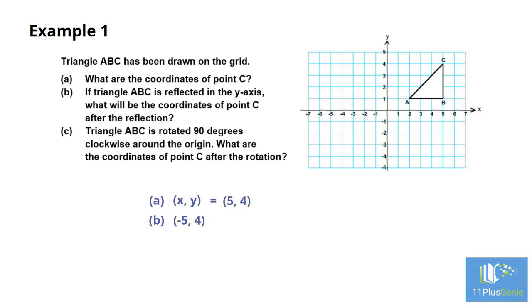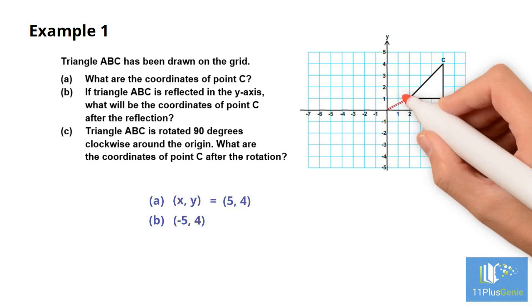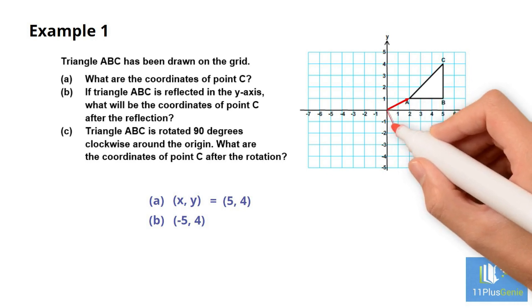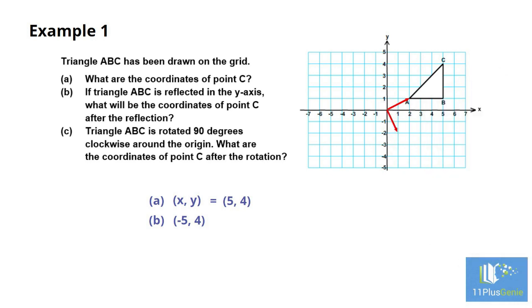Part C: To rotate the shape around a certain point, we will use the same principle. From the point of rotation, in this case the origin or the point (0, 0), draw an arrow to the point. Let's use point A. We now rotate this arrow 90 degrees clockwise to get the new position of point A. Just make sure that the length of the arrow after the rotation is the same as the length before the rotation. For point B, we follow the same method. Draw an arrow from the origin to point B, and then rotate this arrow 90 degrees clockwise to get to the new position of point B. Do the same for point C. We now draw the reflected triangle in its new position. The coordinates of point C are (4, -5).